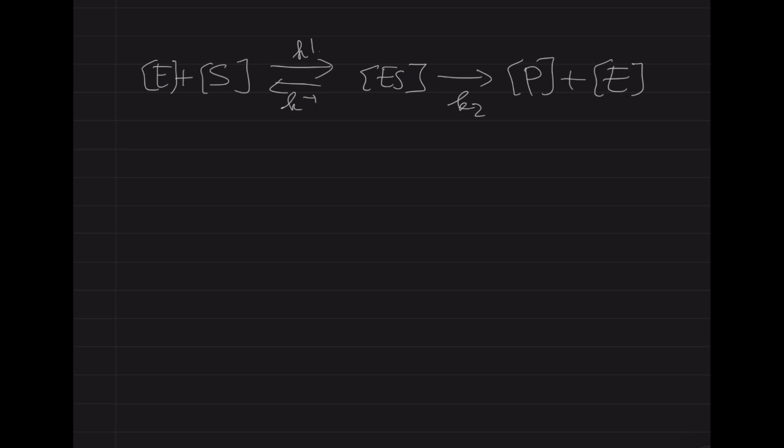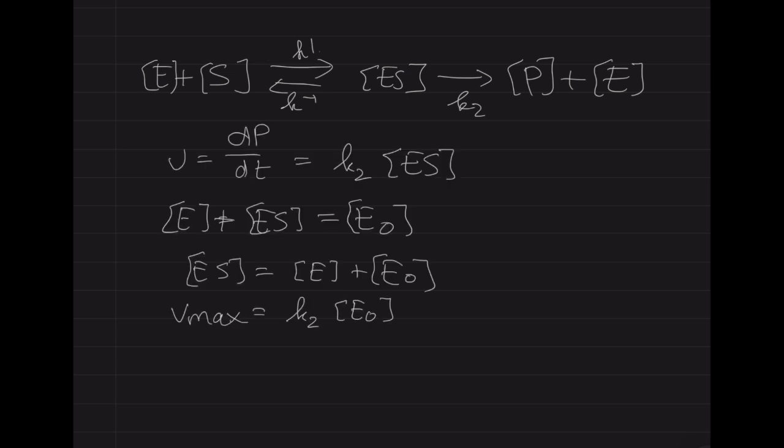So we're going to make an important assumption here, and that this is a reaction that's irreversible, and you only get the product formation, so only K2. So that gives you then for the product formation dP/dt over time, so the V is K2 times the concentration of the enzyme-substrate complex.